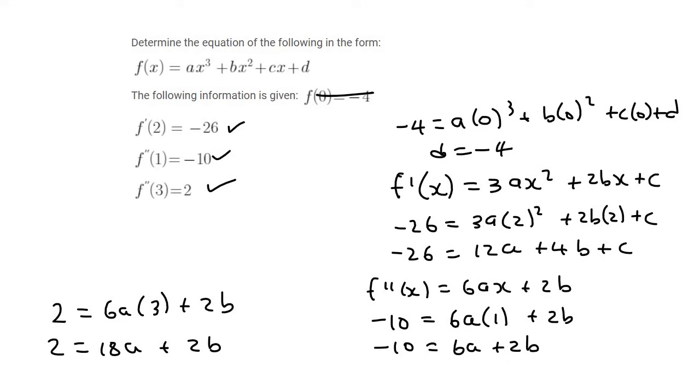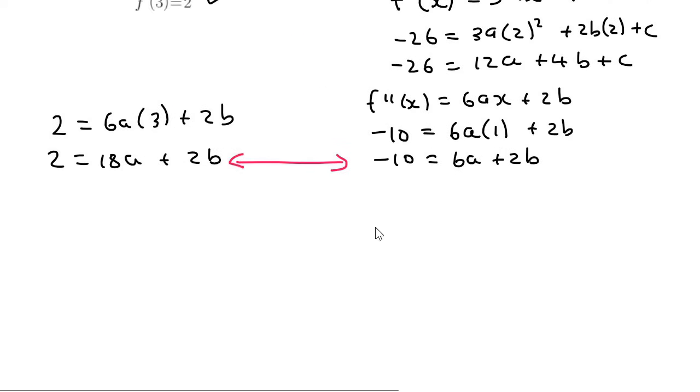So now things should start coming together. What you need to realize is that these two equations can be combined simultaneously. Why? Two equations, two unknowns. So let's do that. Now guys, please don't only follow my method. There are so many ways you can do simultaneous equations. But for an example, I'm going to use this equation over here. And I'm going to get b alone. So I'm going to divide everything by 2 first of all. You don't have to do that if you don't want. And so if I get b alone, it's going to be b equals 1 minus 9a.